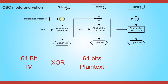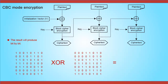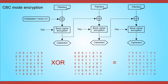and a 64-bit plaintext block go through an exclusive OR operation to produce a 64-bit result. The result is produced bit by bit. For example, the first bit of the result will be 1, the second bit will be 0, and the third bit will be 0. The operation continues for all remaining bits.